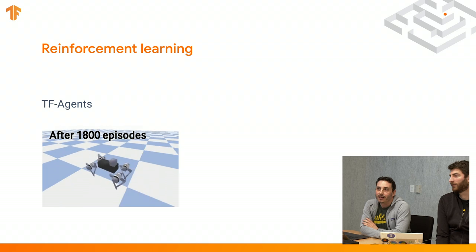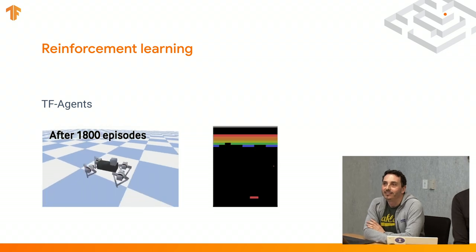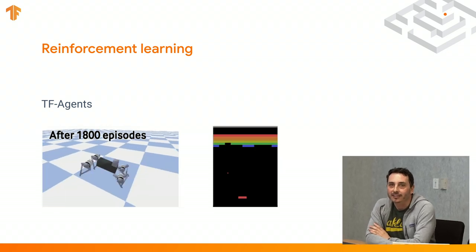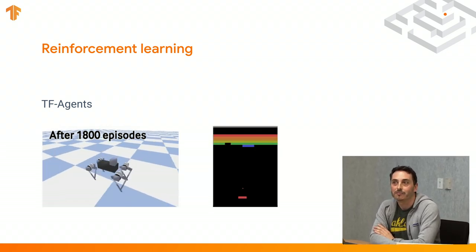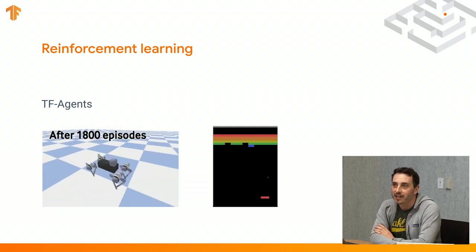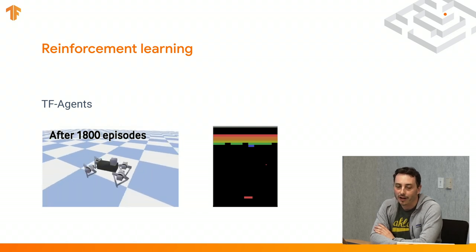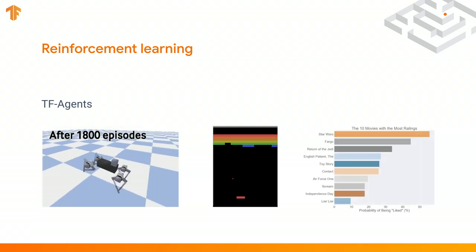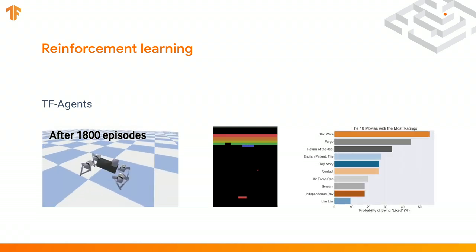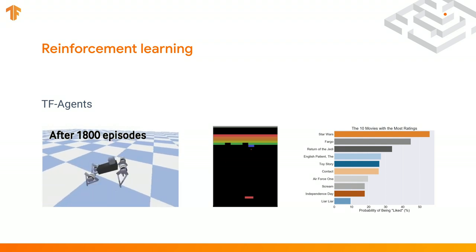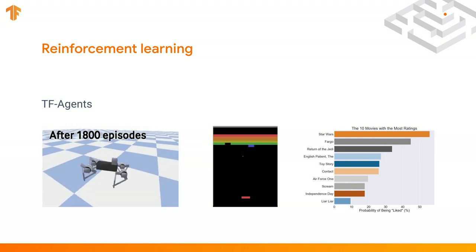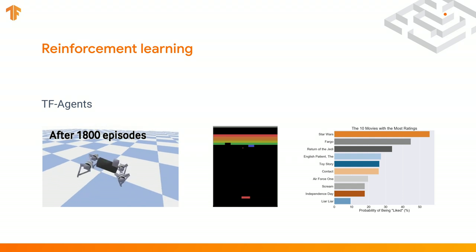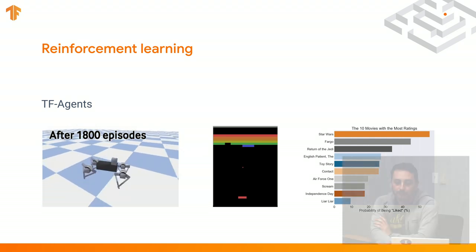We're going to focus a bit more on reinforcement learning and how it's different from other kinds of machine learning and supervised learning. Here are three examples: robotics, a game, and a recommender system. Those are clear examples where you can apply reinforcement learning.